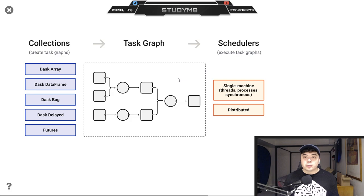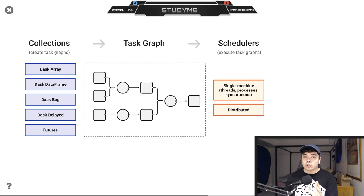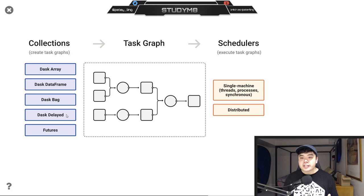Going into some of the Dask theory, looking at the collections, Dask does a great job of keeping their API very similar to two libraries we're already familiar with: Pandas and scikit-learn. The Dask array and Dask DataFrame are pretty similar to Pandas DataFrames and NumPy arrays. But the two we need to understand for big data are Dask delayed and Dask futures.